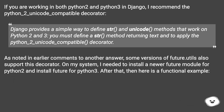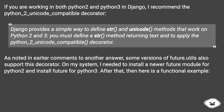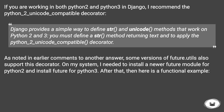If you are working in both Python 2 and Python 3 in Django, I recommend the python_2_unicode_compatible decorator. Django provides a simple way to define str and unicode methods that work on Python 2 and 3 — you must define a __str__ method returning text and apply the python_2_unicode_compatible decorator. Some versions of future.utils also support this decorator. After installing the appropriate future module for Python 2 and Python 3, here is a functional example.